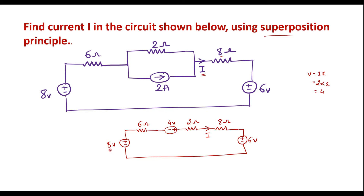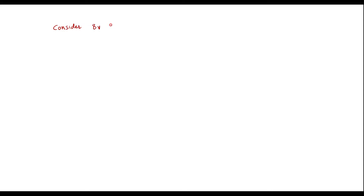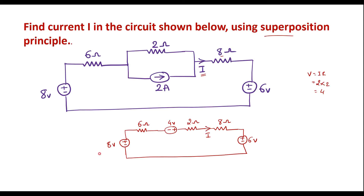Let me consider the 8 volt source alone. When we consider a single source, the other sources should be set equal to zero. If there is a voltage source, we have to short it. If there is a current source, we have to open it. Here we have 2 voltage sources, so we have to short those 2 voltage sources.